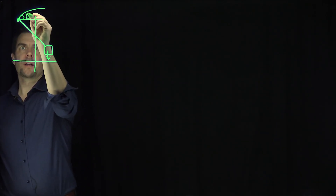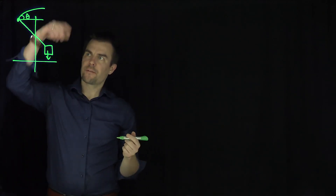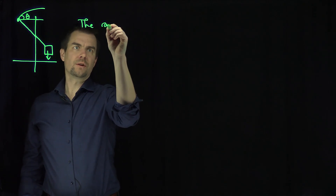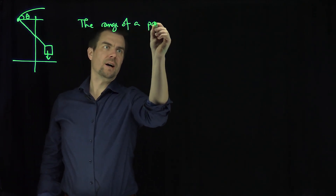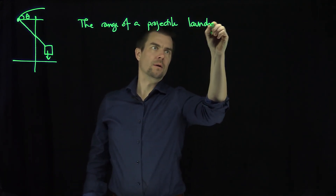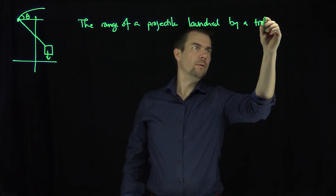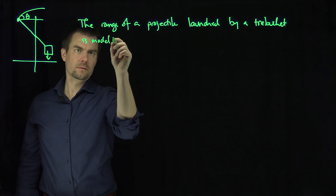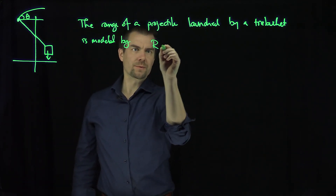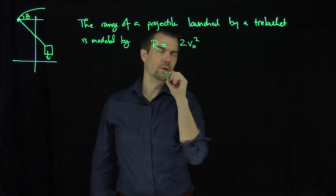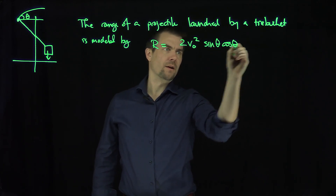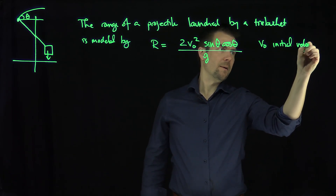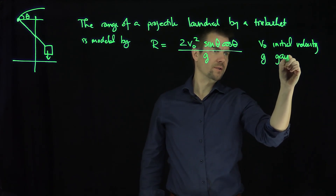There's an angle over here, an angle theta. The objective of this problem is to say, if I have a launch angle of theta, what value of theta is going to optimize the range? The range of a projectile launched by a trebuchet is modeled by: range equals twice the initial velocity of the projectile squared, times the sine of theta, times the cosine of theta, over g for gravity. So v0 is the initial velocity of the projectile, and g is the gravitational constant.